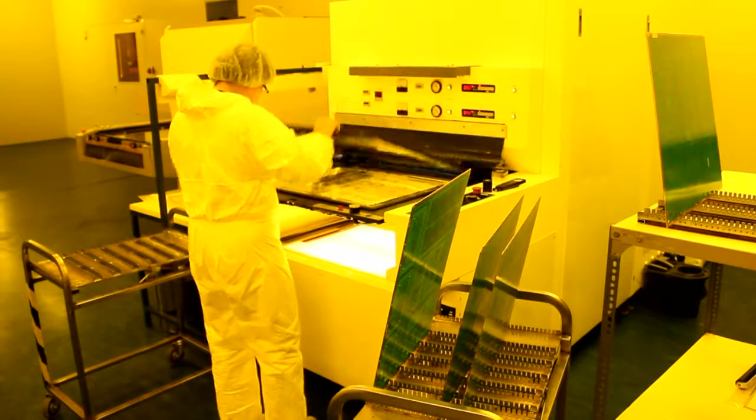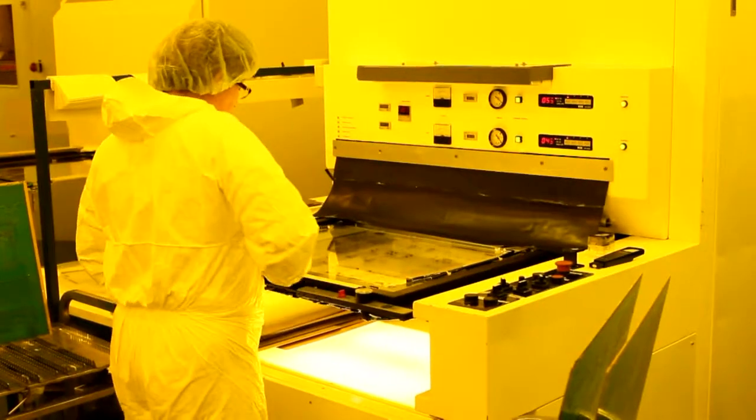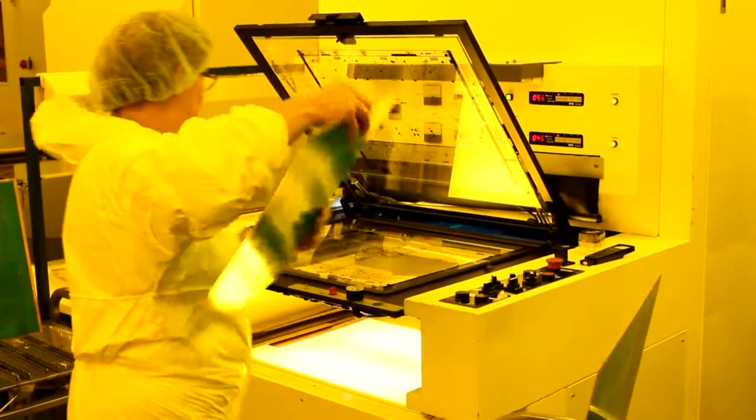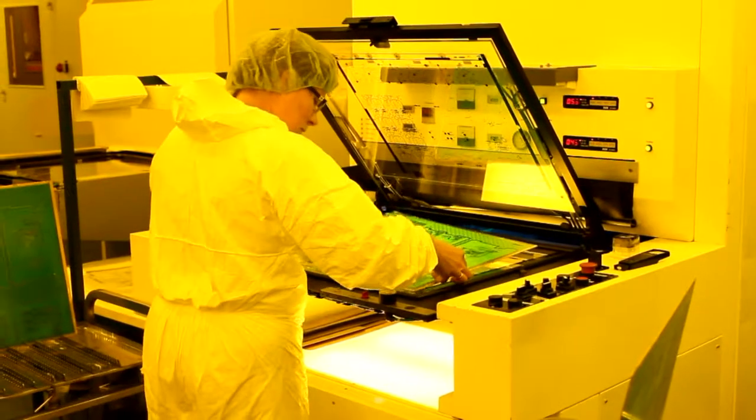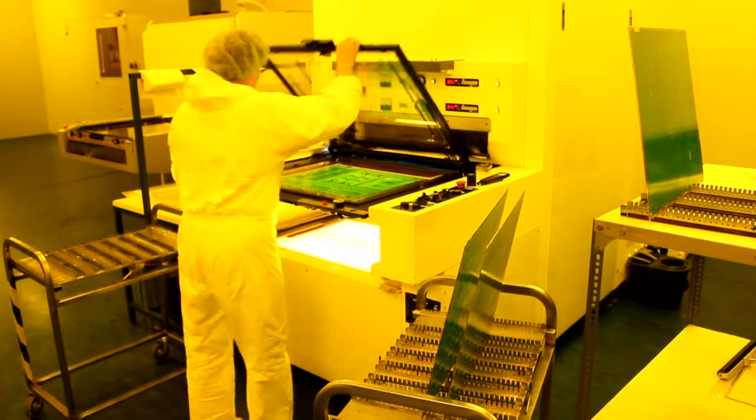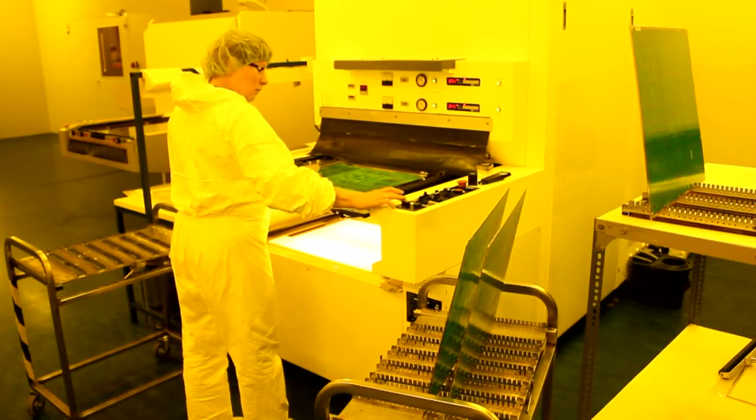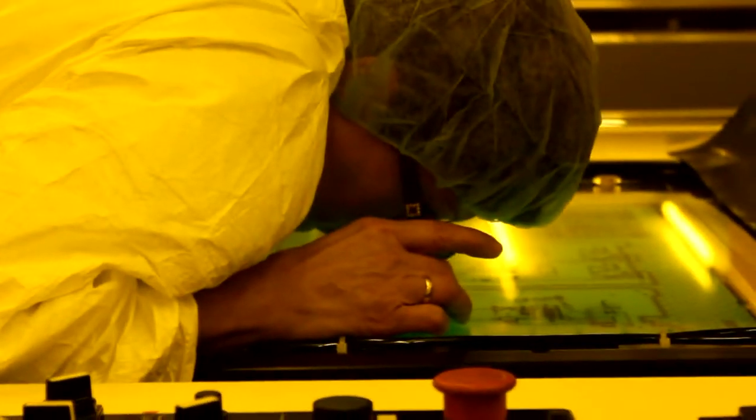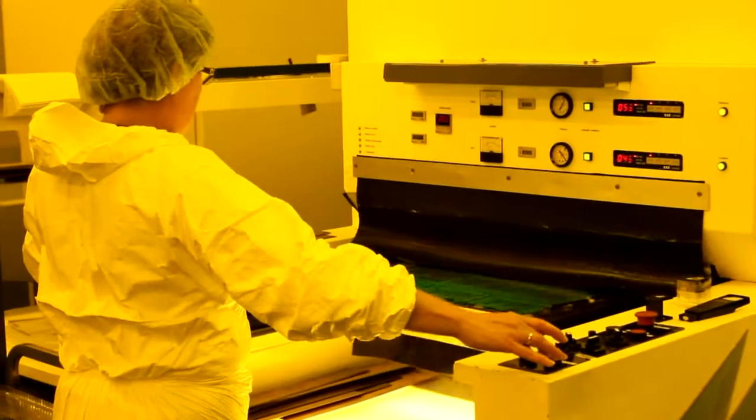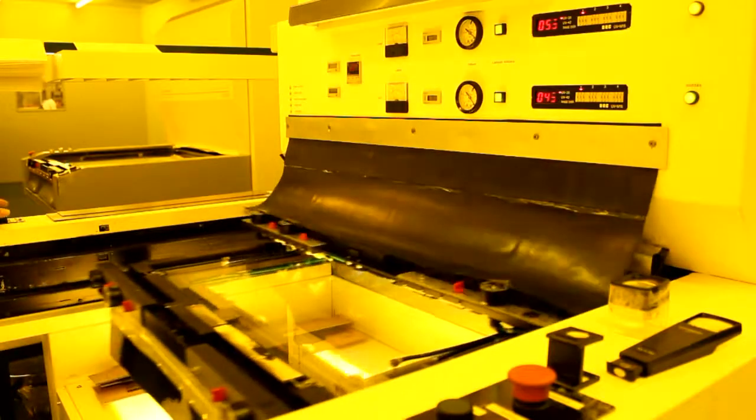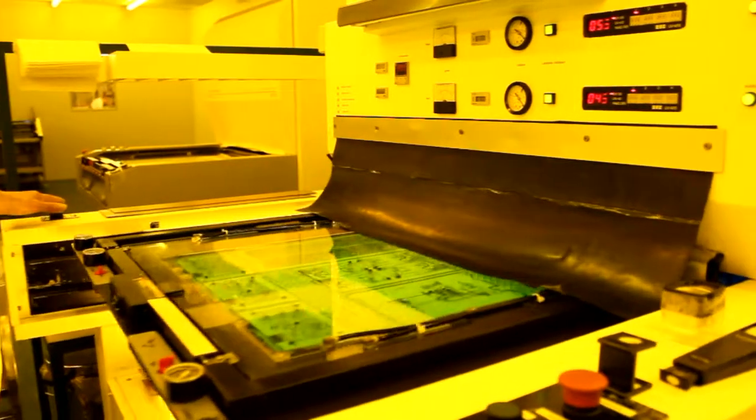Next, the coated panels are imaged. For this we use a two-drawer UV printer. The operator mounts the photo tool films on the machine and then places the panel onto the registration pins. She checks that the film and the copper layer are precisely aligned. Mask alignment would be better than 50 microns. As with the etch and the plating resists used earlier in the process, the UV lamps in the machine harden the ink where the film is clear. That is where we need solder mask on the finished board.